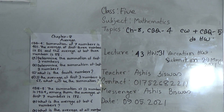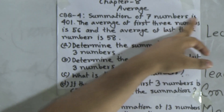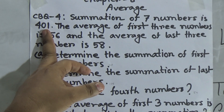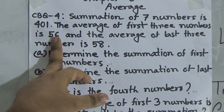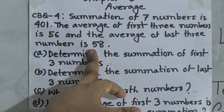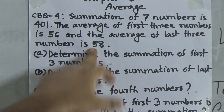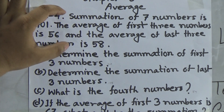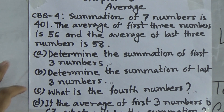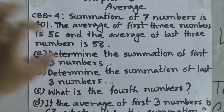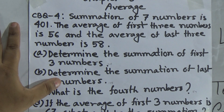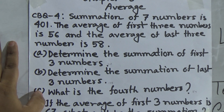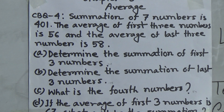Here is CBQ number 4. At first we read CBQ number 4 in order to solve that problem. The summation of 7 numbers is 401. The average of the first three numbers is 56 and the average of the last three numbers is 58. This is the stem of the question. By using this stem, we shall solve A, B, C and D. A: determine the summation of the first three numbers. B: determine the summation of the last three numbers. C: what is the fourth number? D: if the average of the first three numbers is 67, what will be the summation?